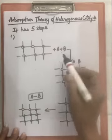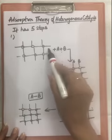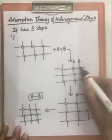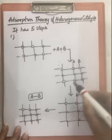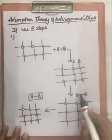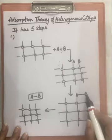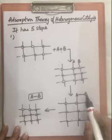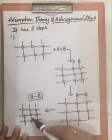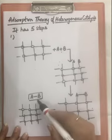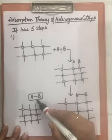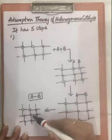Adsorption theory of heterogeneous catalysis — summary: First step, reactants diffuse towards the catalyst. Second step, they adsorb on the surface of the catalyst. Third step, they chemically react on the surface of the catalyst to form a product through an intermediate stage. Fourth step, the products separate out from the catalyst — that is desorption. Last step, diffusion of products away from the surface of catalyst.